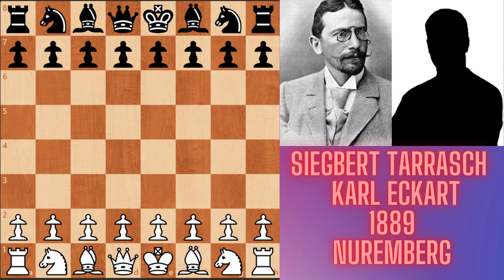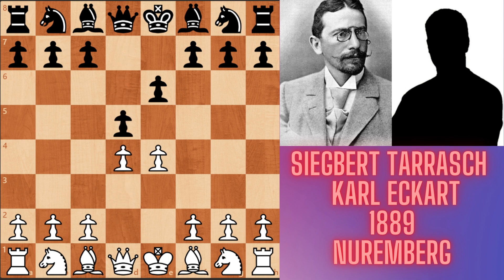White pieces: Tarrasch. Black pieces: Eckhart. Tarrasch played e4 — King's pawn opening. Black played e6 — French Defense. d4 played by Tarrasch, and d5 — French Defense classical variation. In this game, Tarrasch played for the first time in chess history a different move: Knight d2, and this is called the French Defense Tarrasch variation because of this game.